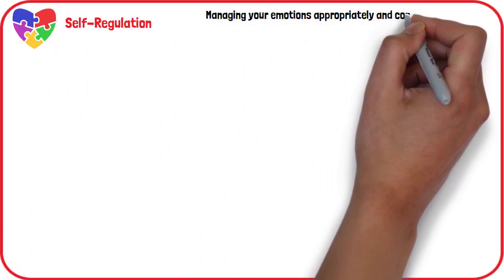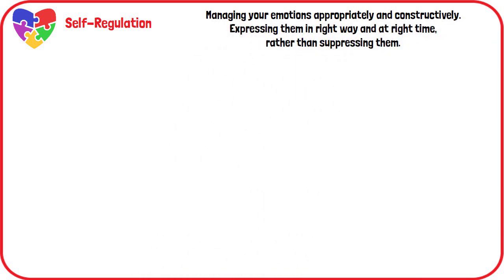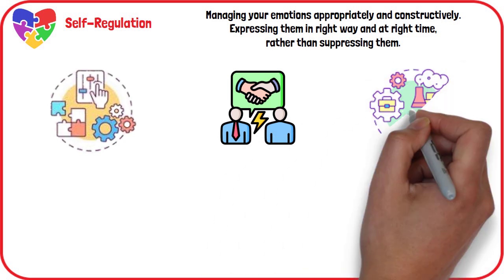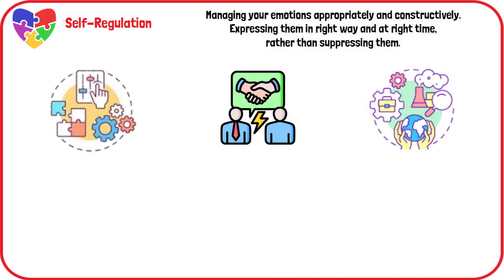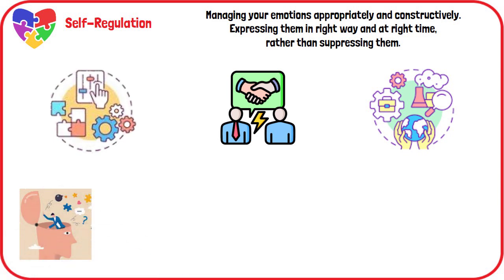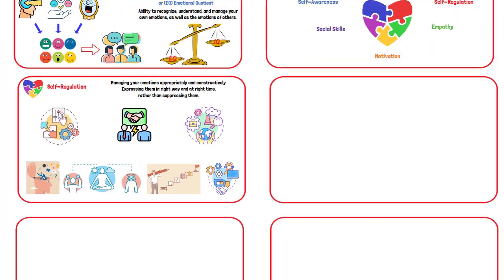Self-Regulation involves managing your emotions in a way that is appropriate and constructive. It means expressing your emotions in the right way and at the right time, rather than suppressing them. Key aspects include adaptability, managing conflict effectively, and being conscientious. To improve self-regulation: be mindful of your thoughts and feelings, build skills for distress tolerance, manage difficult emotions constructively, view challenges as opportunities, and practice effective communication.